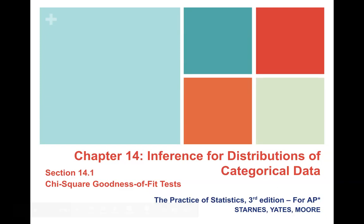In chapter 14, we're going to learn three chi-square tests. The first one is in section 14.1 — the chi-square goodness of fit test on your calculator.